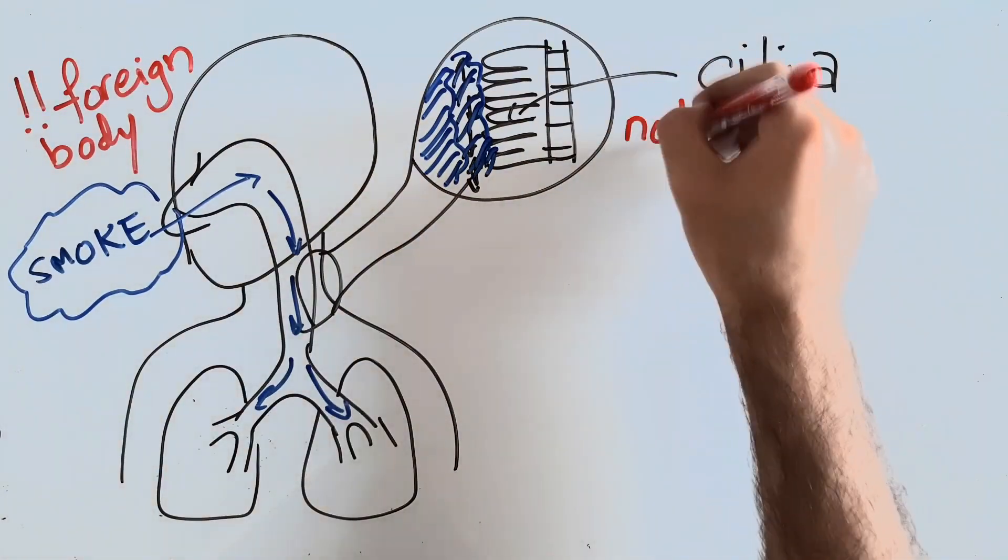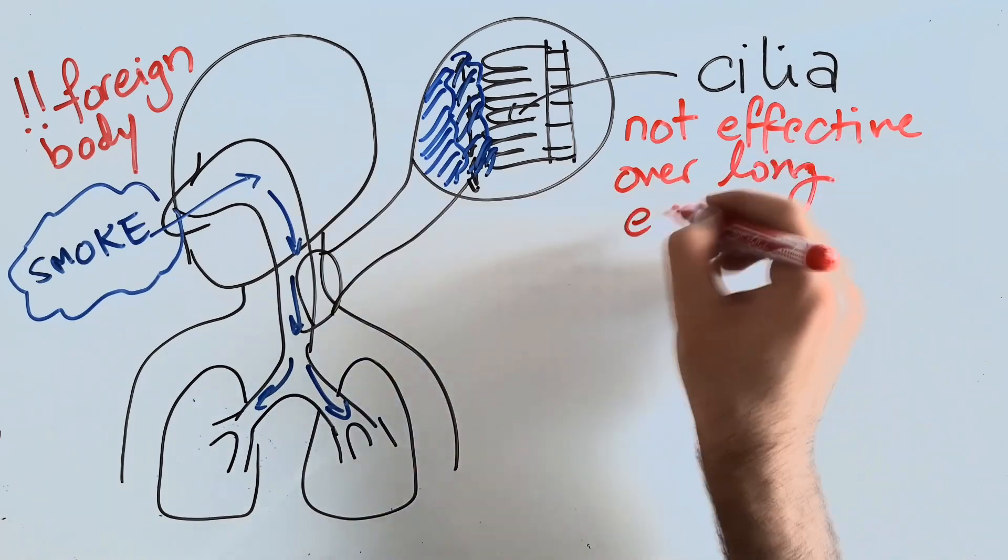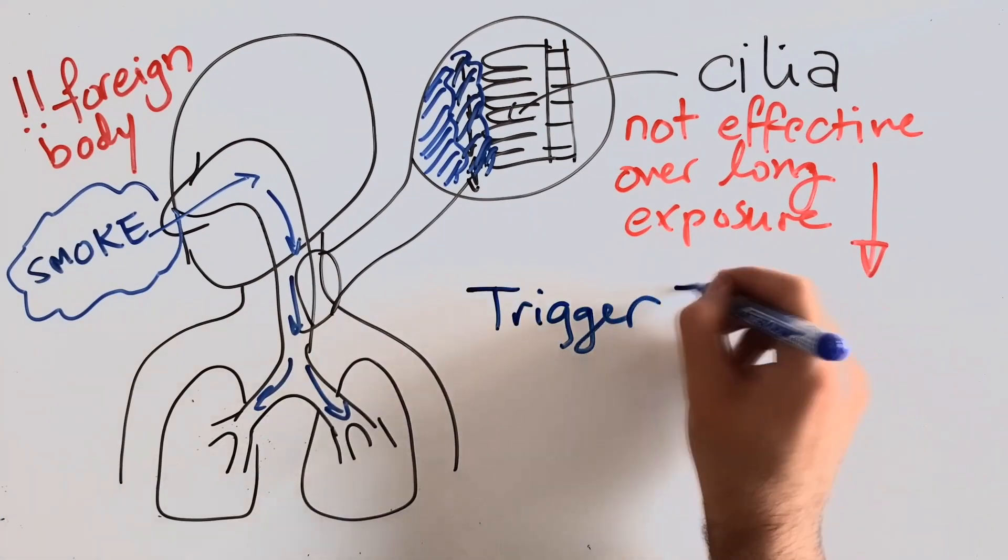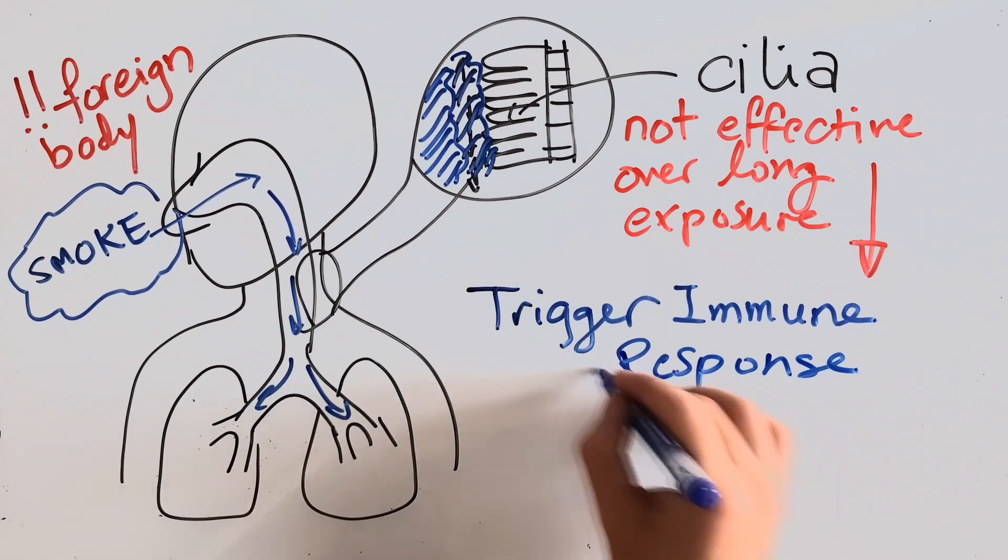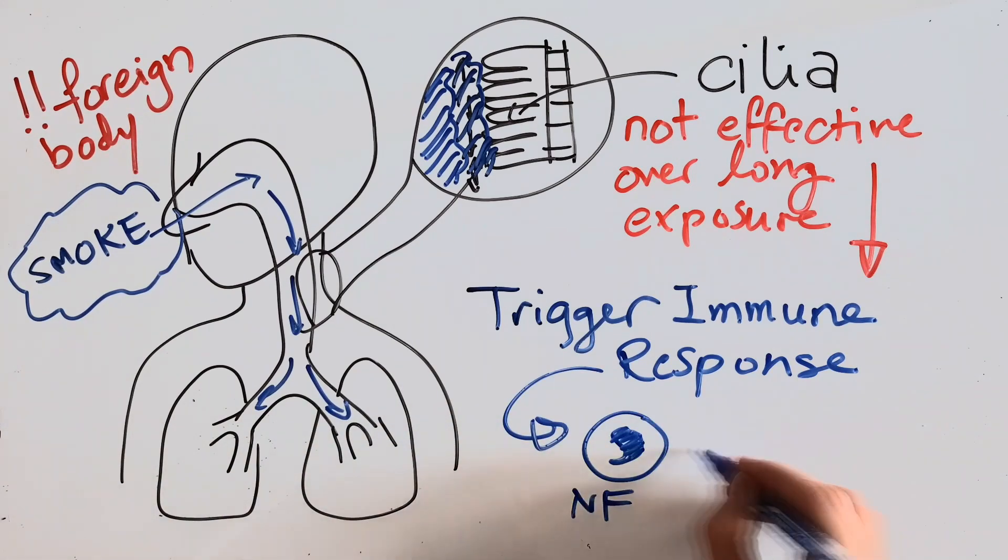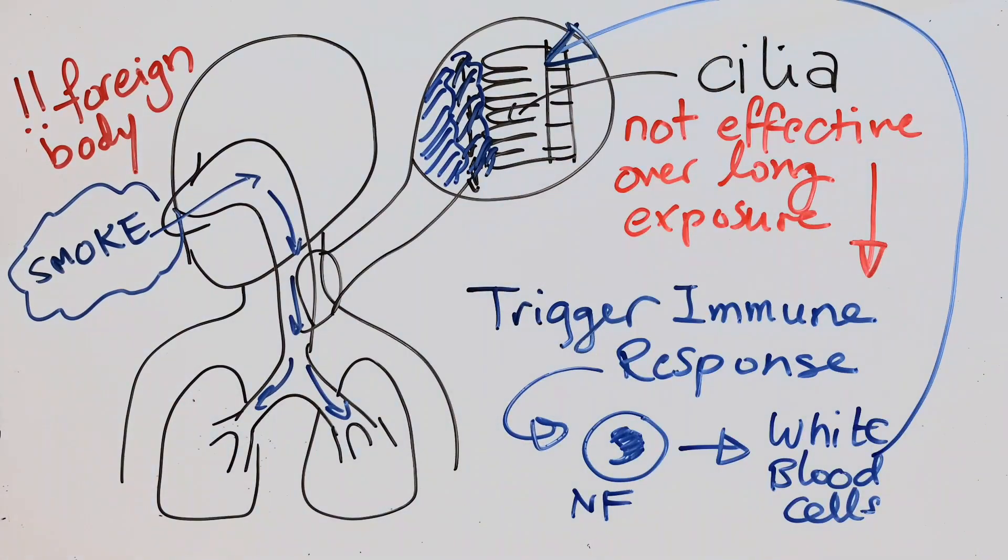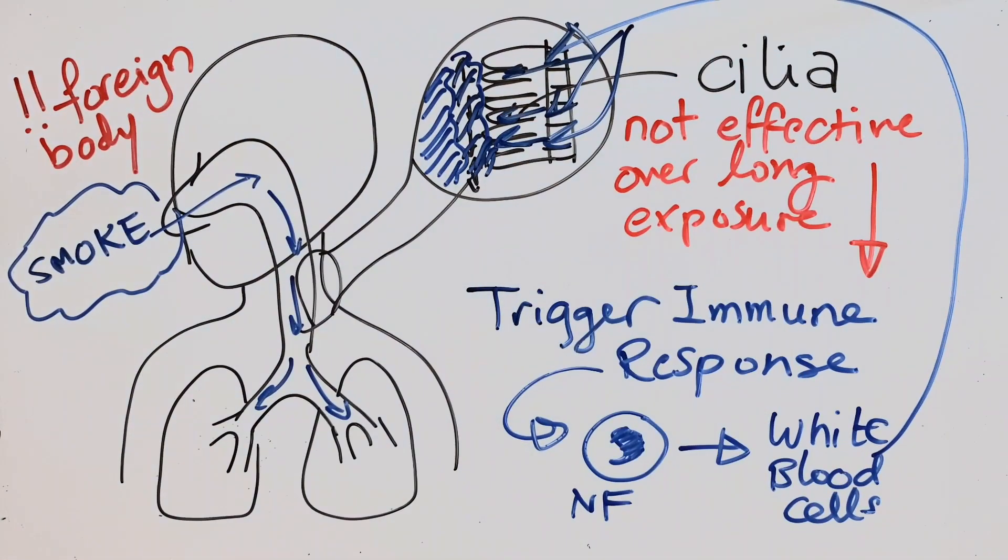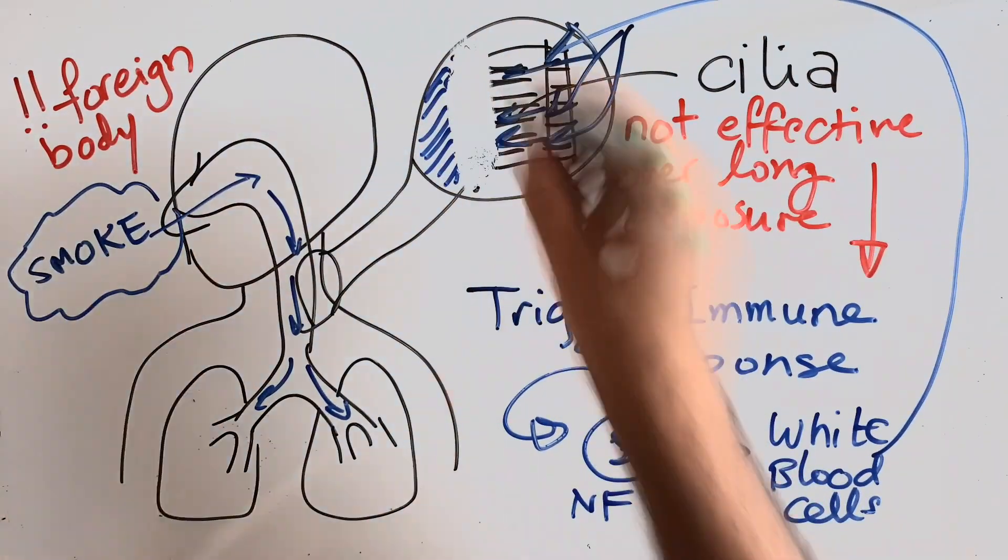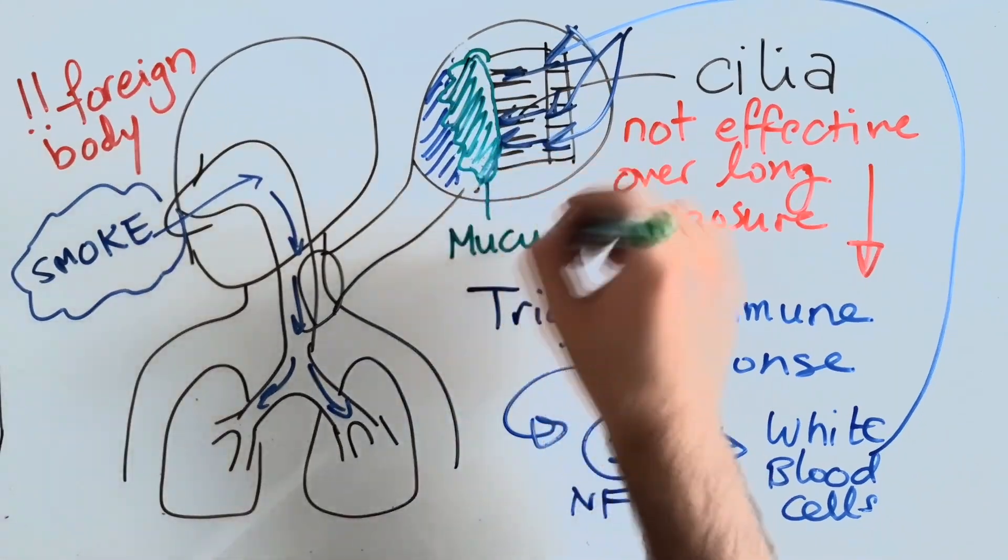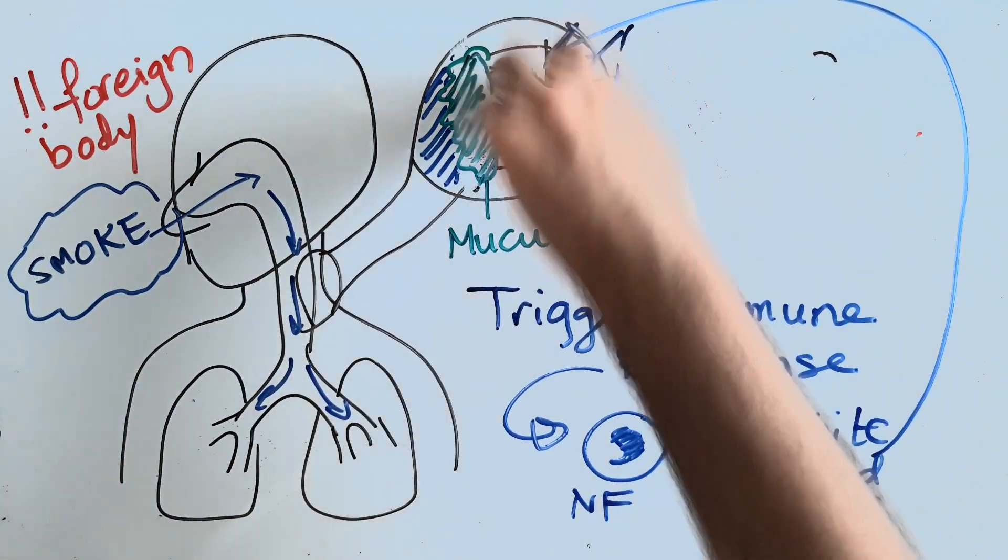as time goes on your body will trigger an immune response. There are cells called neutrophils and these neutrophils will start coming and they will trigger more and more leukocytes to follow them in order to get rid of this foreign body which is the smoke. Over time this will produce more and more mucus that will cover up your airways and it will also